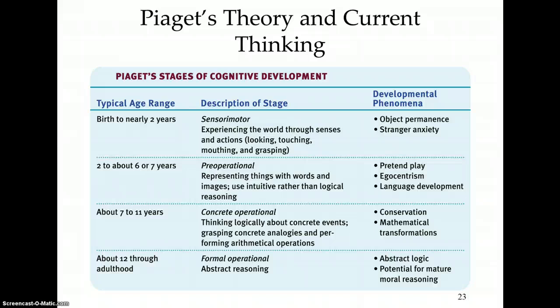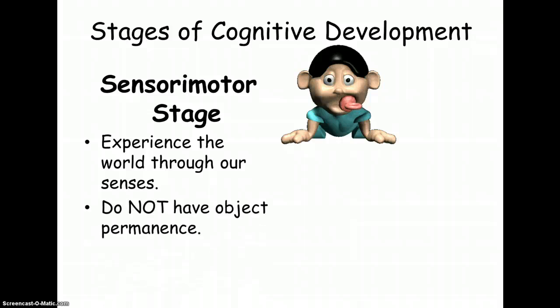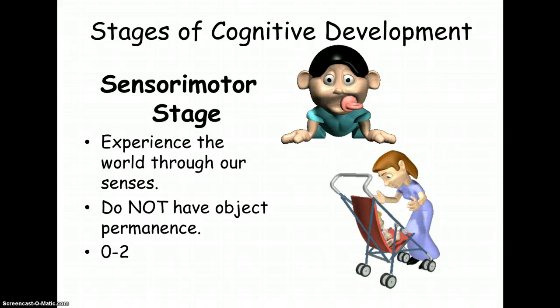Yesterday we learned about the stages of social development — Erikson and Freud — and today is all about cognitive development. Here are Piaget's stages. Stage number one is the sensorimotor stage: babies from birth to about age two experience the world through their senses, and they don't yet have a concept called object permanence. Here's a real video example of object permanence.